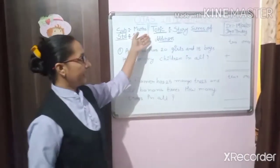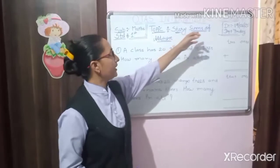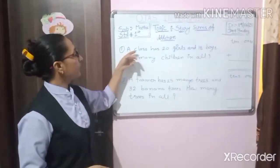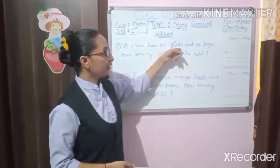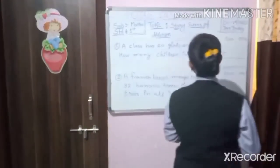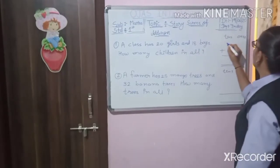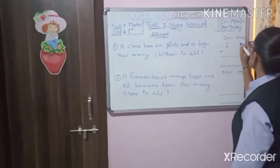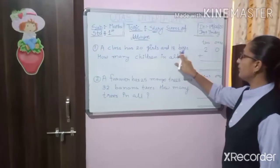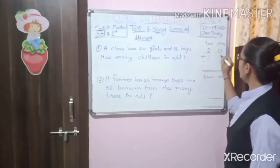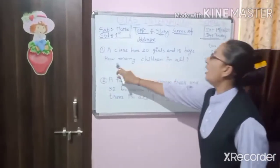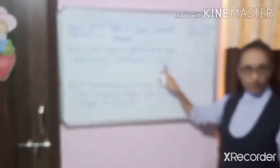Our next topic is story sums of addition. Here number 1: A class has 20 girls. So what we have to do here first? Here we have to write 2 tens and 0 ones. And 18 boys — so what we have to write here? 8 ones. 18 boys. How many children in all?